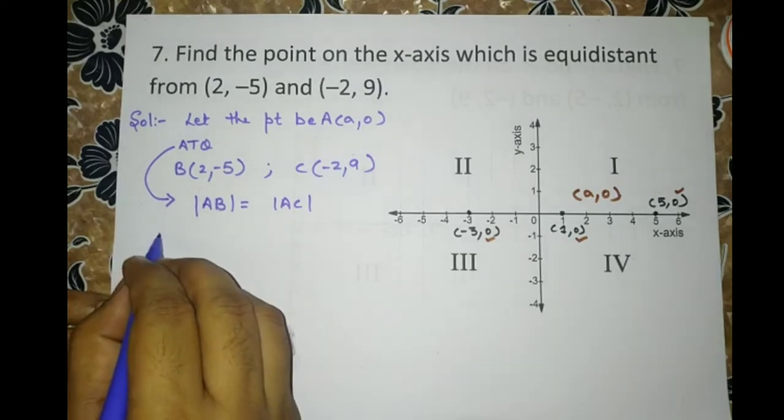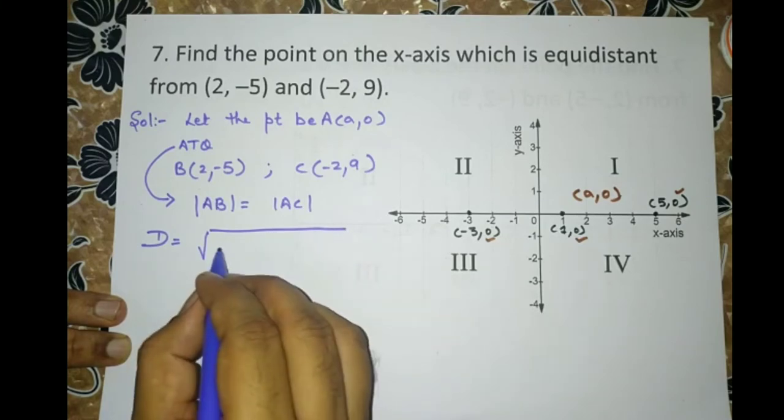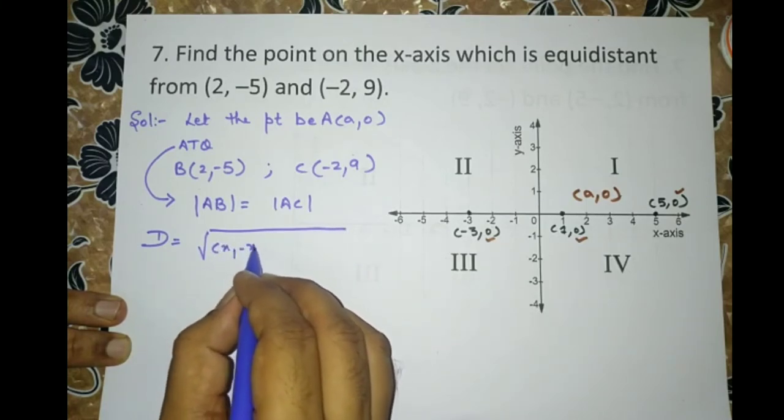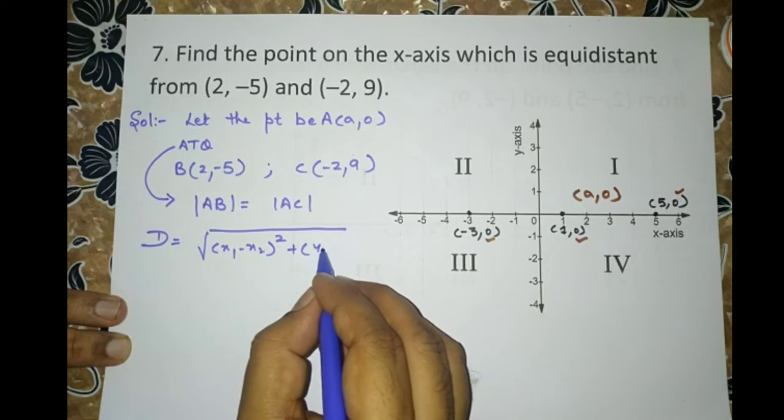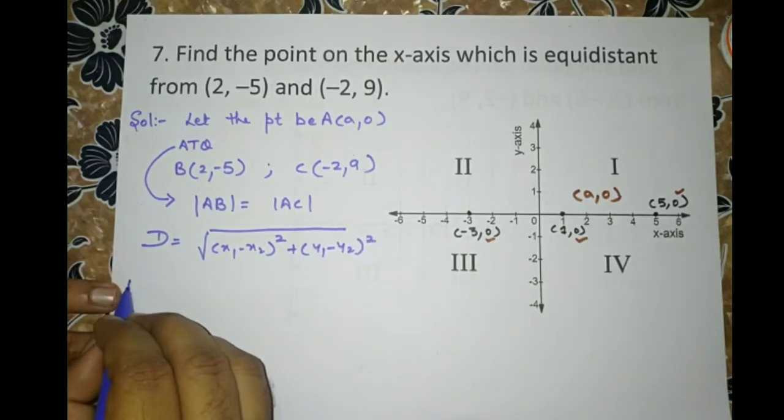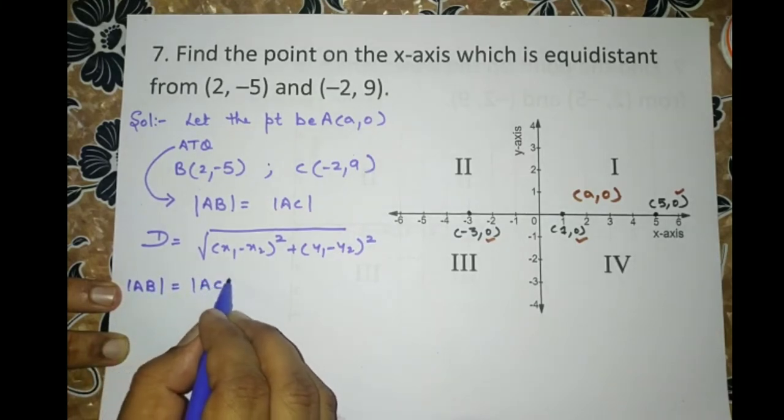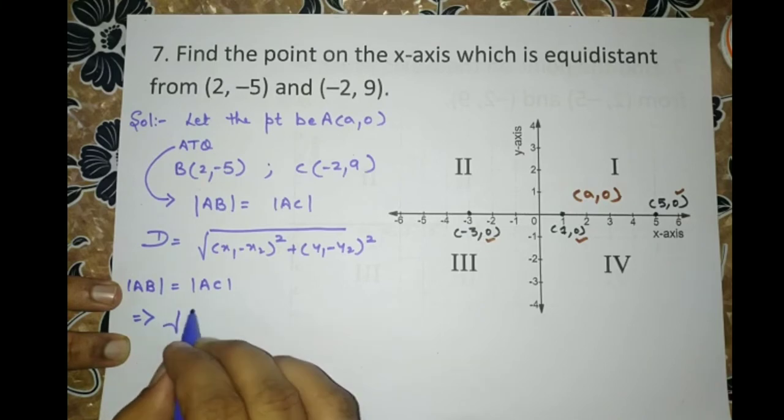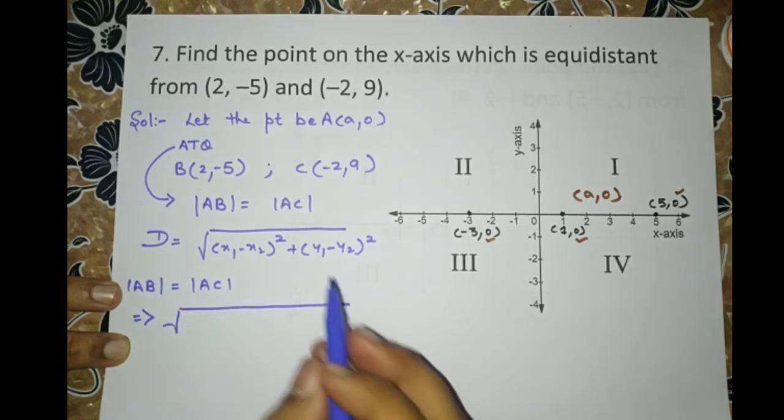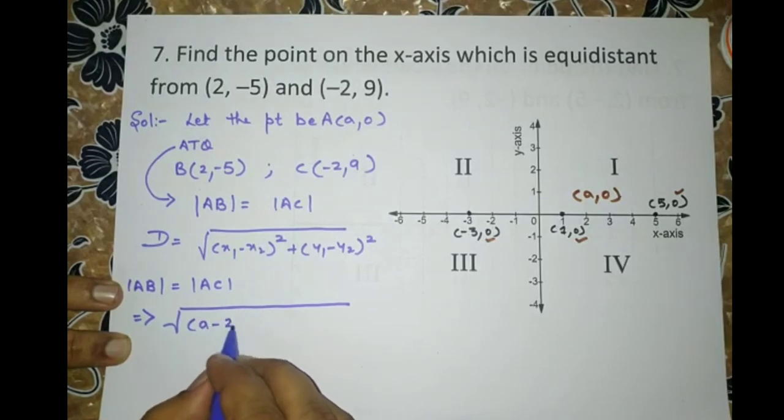We know the distance formula. Square root of x1 minus x2 whole square plus y1 minus y2 whole square. Where x1, y1 and x2, y2 are the coordinates of the terminal points. So it will imply square root of A point is A, 0. So it is A minus 2 whole square plus 0 minus of minus 5 whole square.